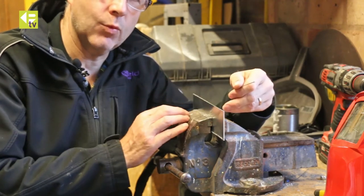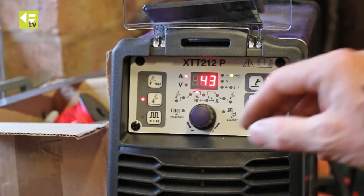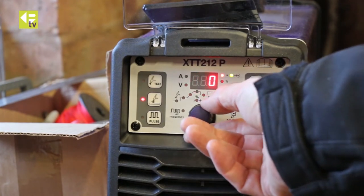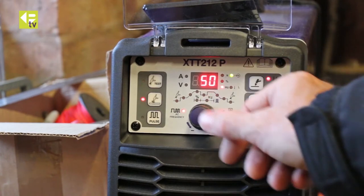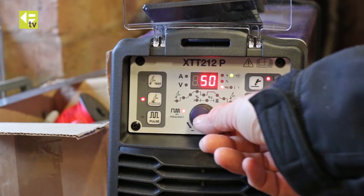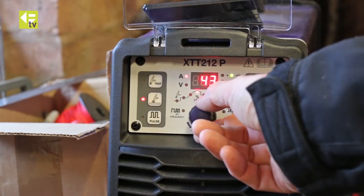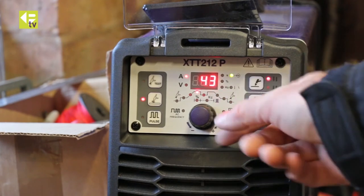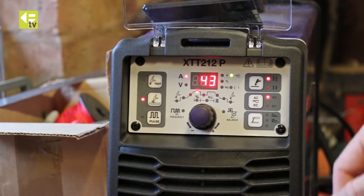Our first setup: we're going to use an AC frequency of 50 Hertz, which is actually the lowest on the machine. The main welding current is about 43 amps. So a straight AC 50 Hertz.